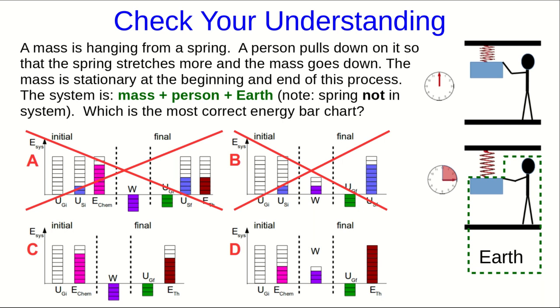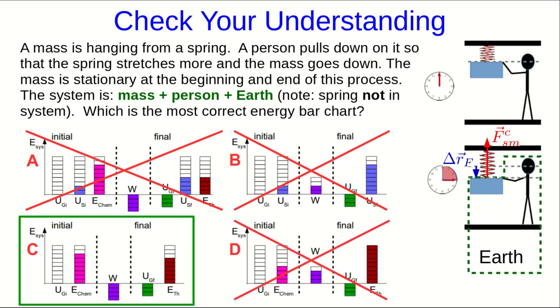Now, look at the work done. The external force that's doing work is the force that the spring exerts on the mass. The mass moves down, so the force displacement vector points down. Since the force displacement vector and the force point in opposite directions, that tells us that the work is negative, and so the correct answer is C.